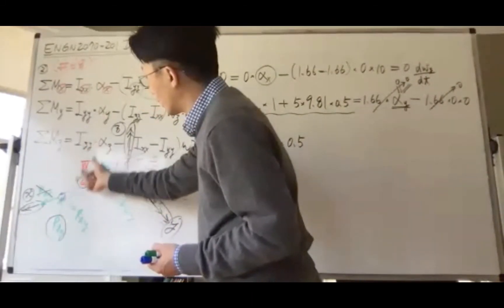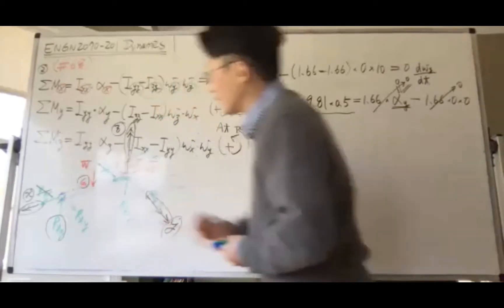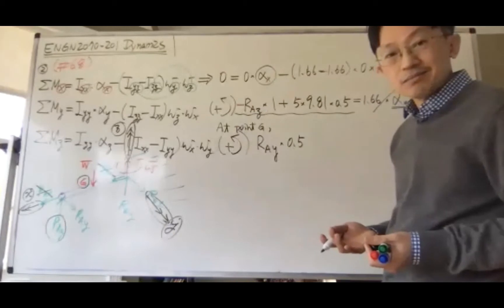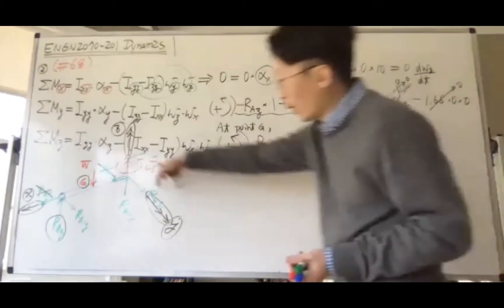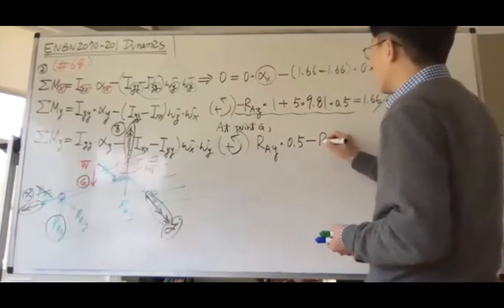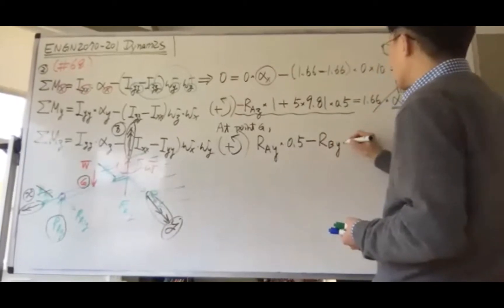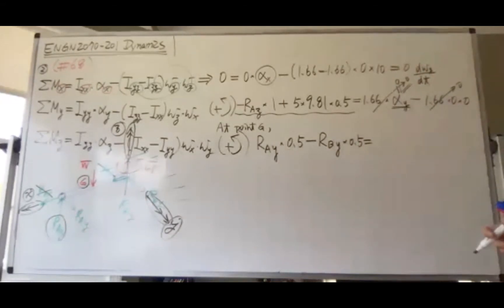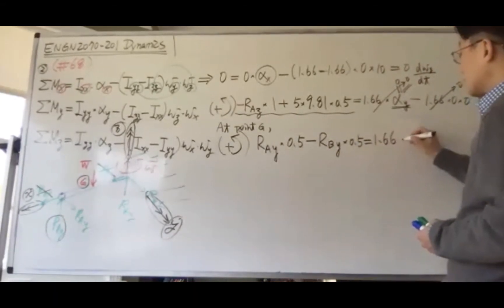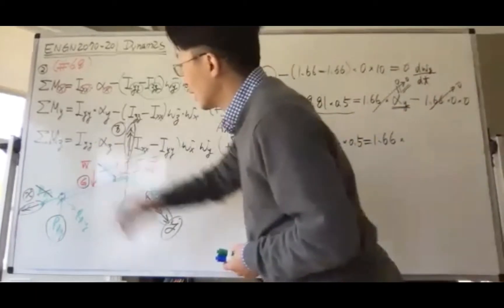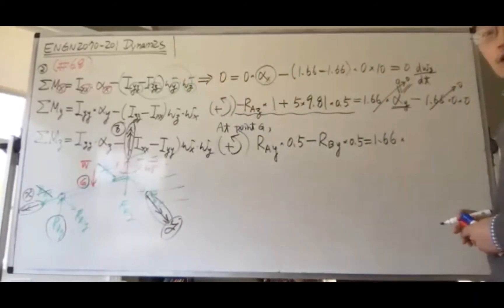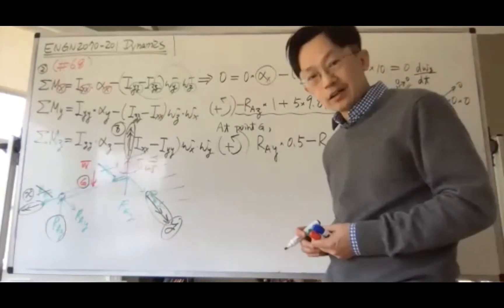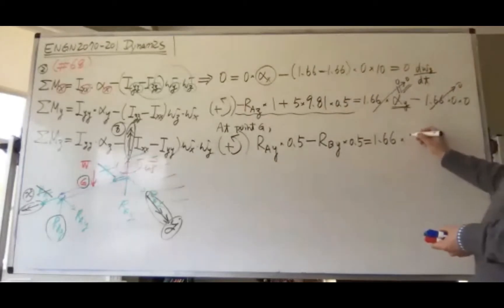R_by produces a negative moment because it goes in the negative direction. R_by is 0.5 times I_zz, which is 1.66 times alpha_z. What's alpha_z? It's the time derivative of omega_z. Because omega_z is 10, a constant, this gives you zero.